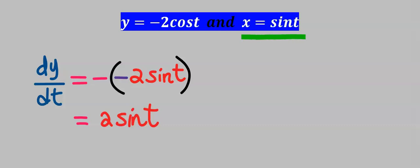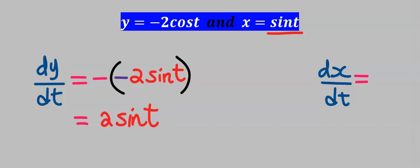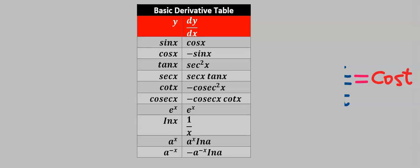We are done with the differentiation of the y function. Next let's differentiate the x function: x = sin(t). This is x and this is t, hence we are going to find dx/dt. If you differentiate sin(t) you are going to get cos(t), which we have obtained from the basic derivative table.